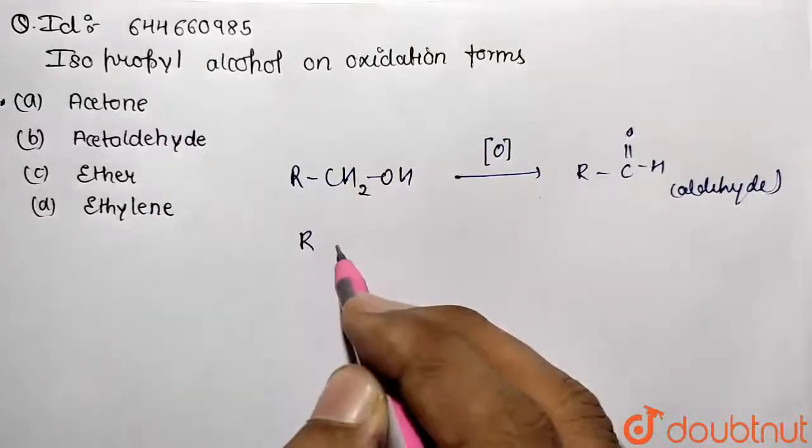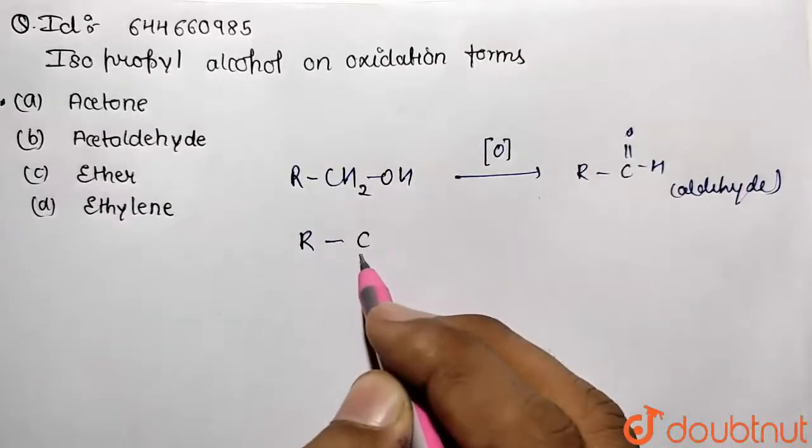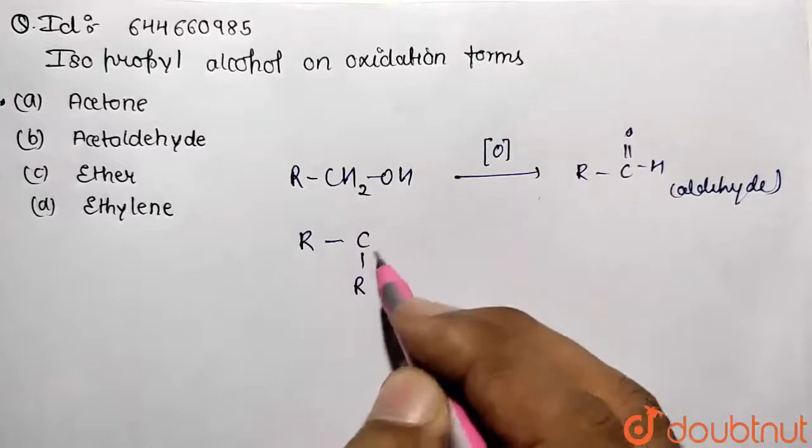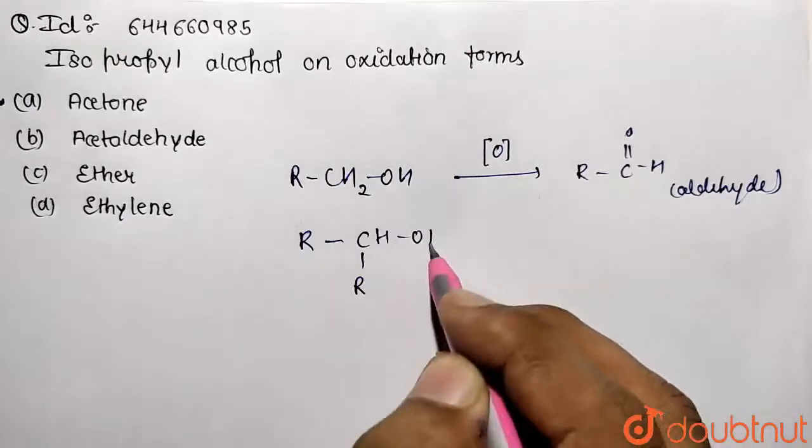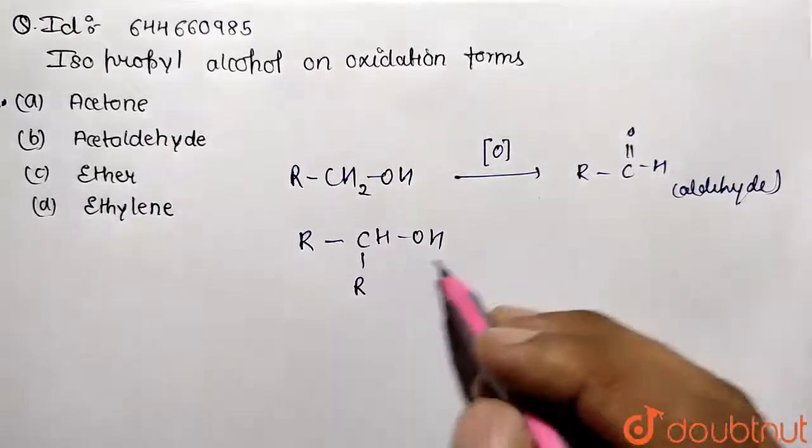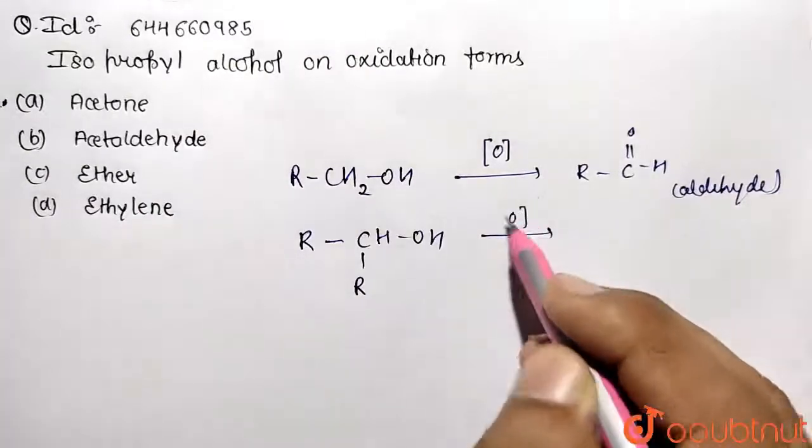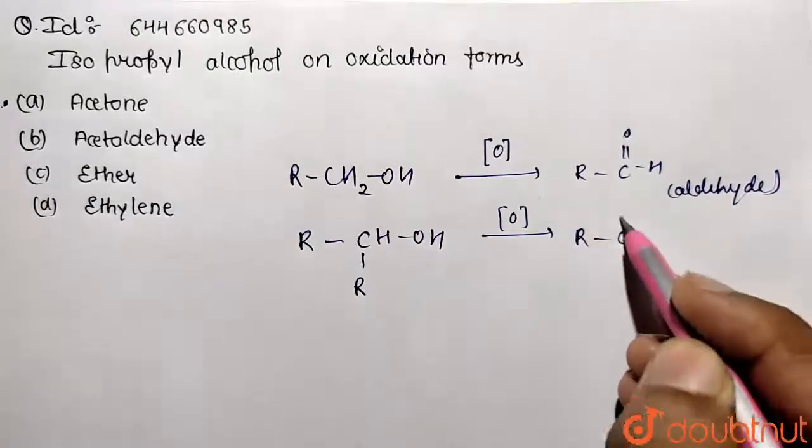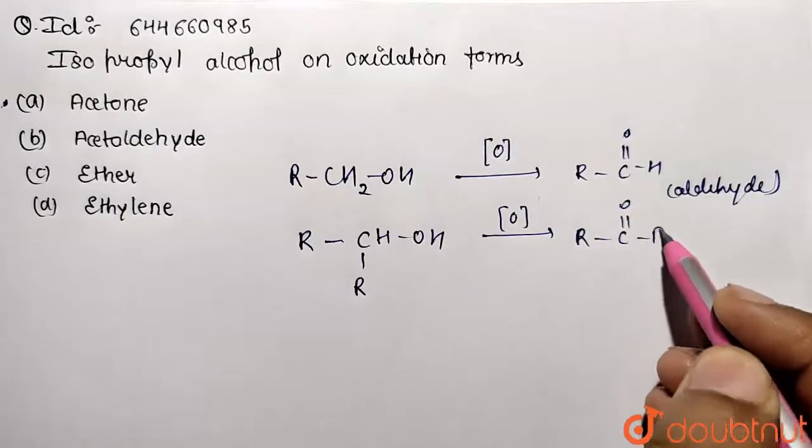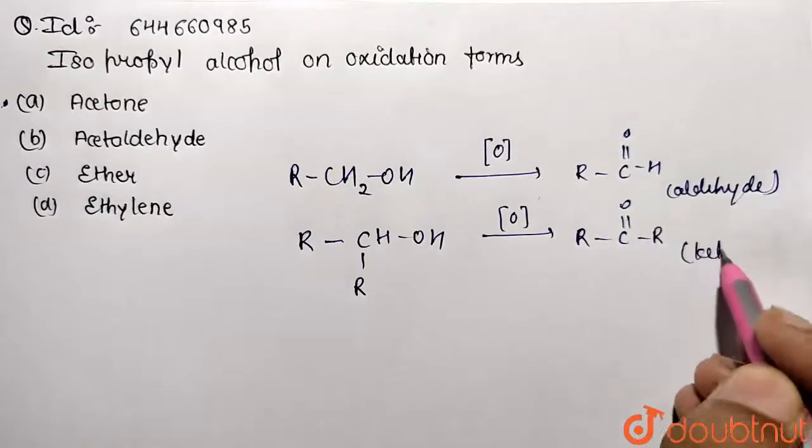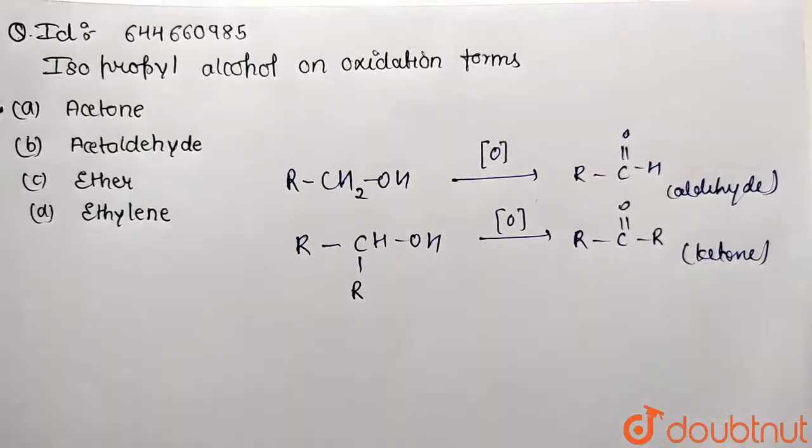If we are going to take the secondary alcohol, this is going to carry two alkyl groups. This is the second degree alcohol. If we are doing the oxidation, what will be formed? Correspondingly ketones will be formed. This is ketone.